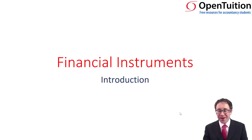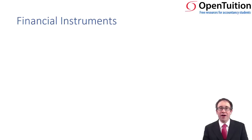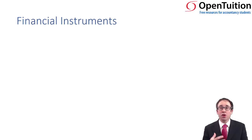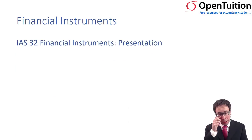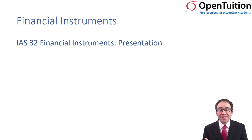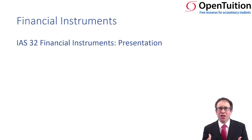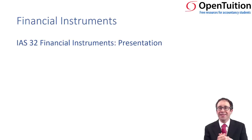So let's go through and have a look at financial instruments and what financial instruments actually are. Before we get there, we need to know what accounting standards cover financial instruments, and I think that's why it gets a little bit complex because you've got three separate accounting standards. The first one is IAS 32, which covers the presentation of your financial instruments — looking at whether we record something as a financial liability within the financial statements or whether we record it as equity.